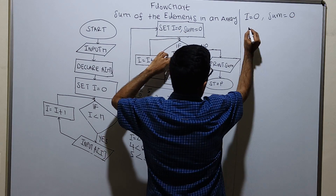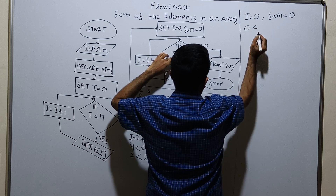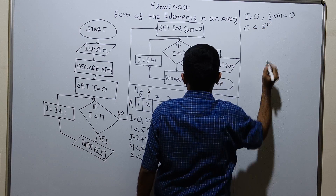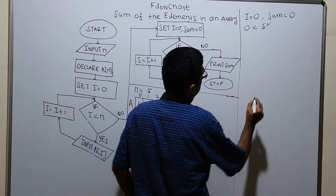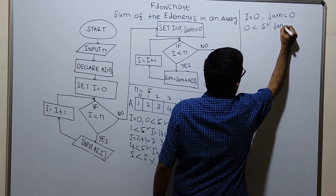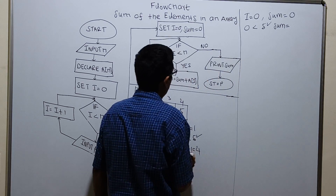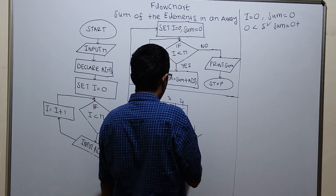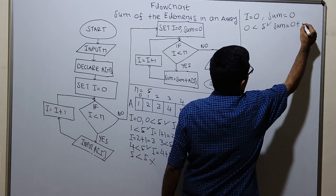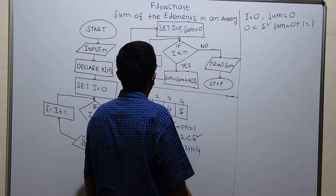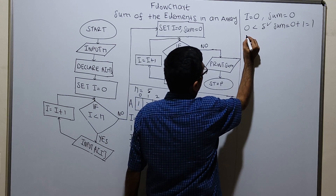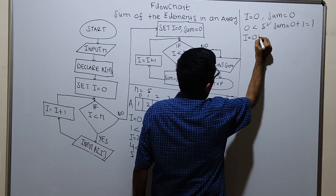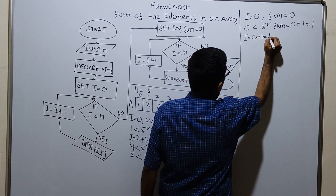i less than n: 0 less than n. What is the n value? n value is 5. 0 less than 5 is true. sum equal to sum plus a of i. sum equal to existing value of sum equal to 0. plus i value is 0, a of 0 having value 1. 0 plus 1 which is equal to 1. i equal to i plus 1. i equal to existing value of i is 0. 0 plus 1 which is equal to 1.